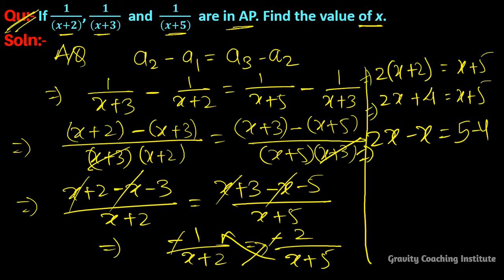Therefore 2x minus x equals 5 minus 4, which implies x equals 1. That's the answer.